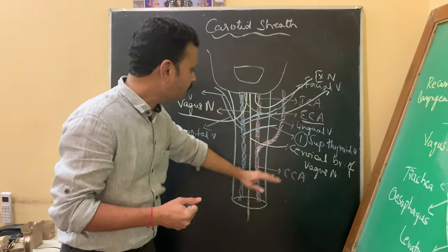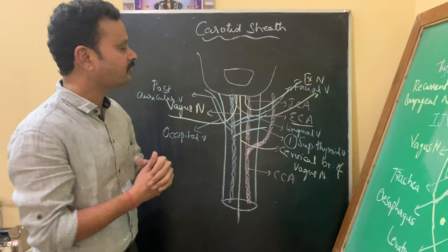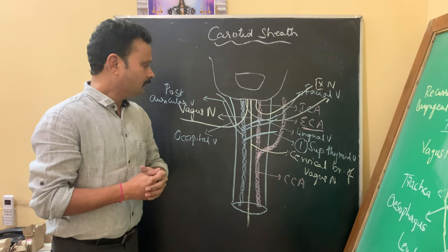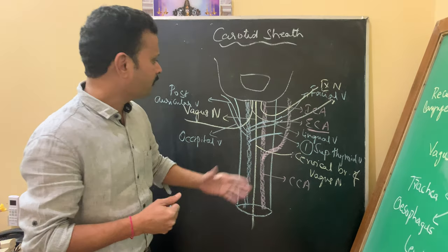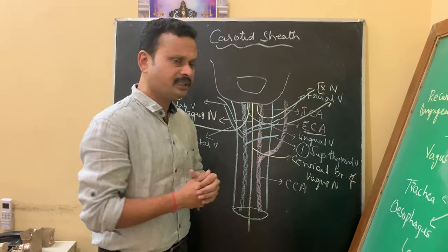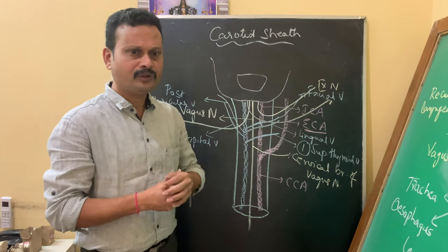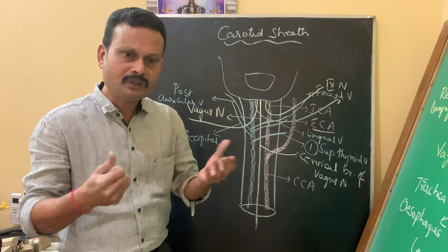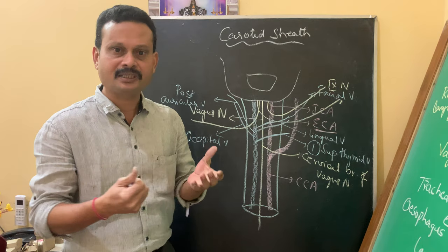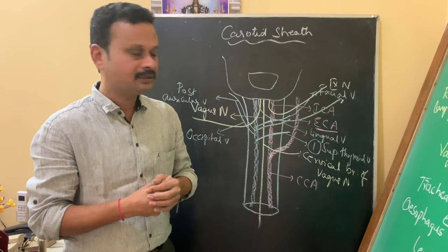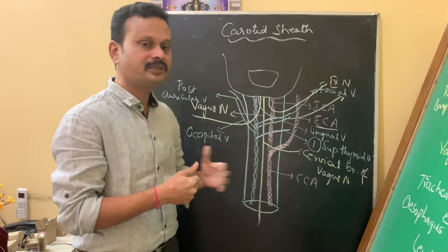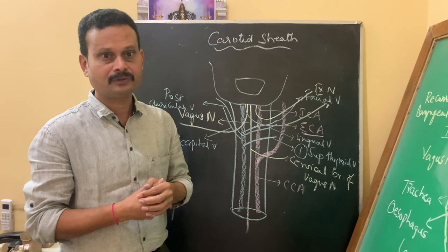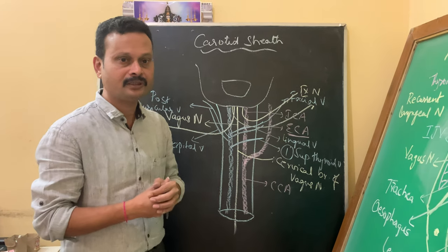These are overall the structures which pierce the carotid sheath. The clinical importance or applied anatomy of this sheath is that during block dissection of the neck to remove the cervical lymph nodes in surgeries, this carotid sheath has to be exposed.